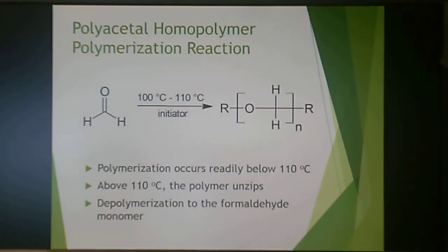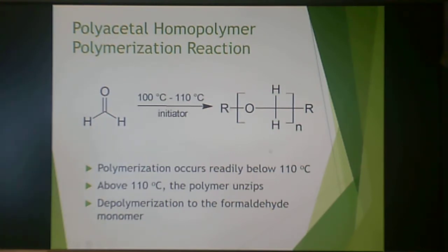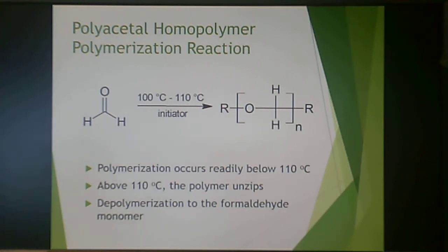In the homopolymerization reaction, formaldehyde monomer is polymerized in the presence of an initiator at 100 to 110°C to produce the polyacetal repeat unit. Polymerization occurs readily below 110°C, but above that temperature the polymer degrades or unzips back to formaldehyde monomer. Since formaldehyde has serious health effects, this instability is a significant concern, which is why capping with acetic anhydride is used.